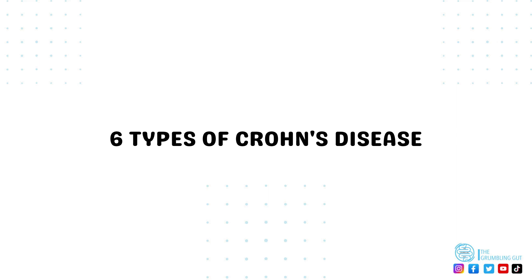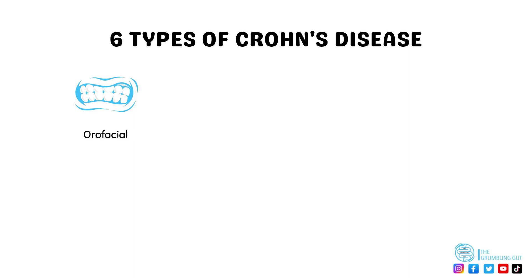Depending on which part of the intestines is affected with inflammation, that will determine the type of Crohn's disease a person has, of which there are six types, and more than one type can occur in one person. The first type is oral facial granulomatosis, which is the name given when Crohn's disease affects the mouth, and is most likely — despite being rare — to occur in children.